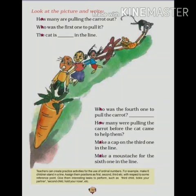They pulled out the carrot — first the father, then the wife, then the daughter, then the monkey, and then again one kangaroo or monkey is sitting and they are pulling out the carrot from the field. Who was the fourth one to pull the carrot? The fourth one is a dog — 1, 2, 3 and 4. How many were pulling the carrot before the cat came to help them? The cat is at the last, so 1, 2, 3, 4, 5 people were pulling out the carrot.